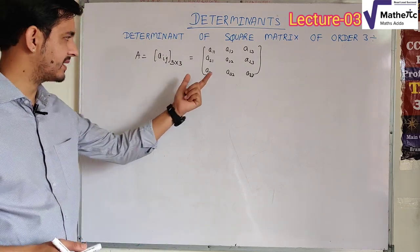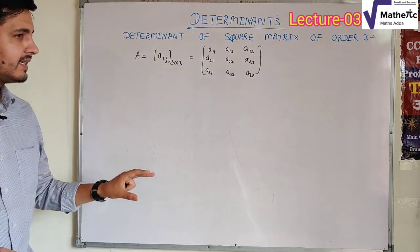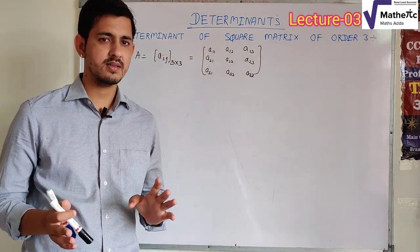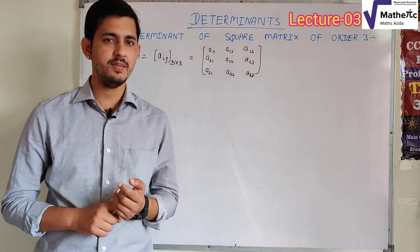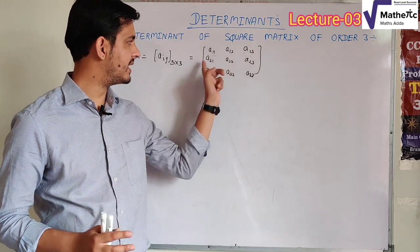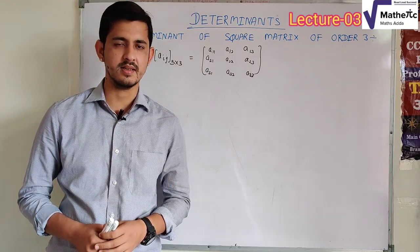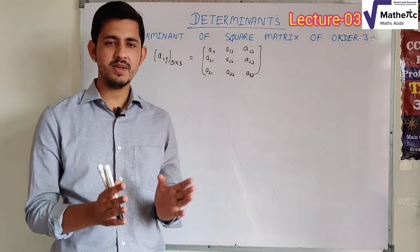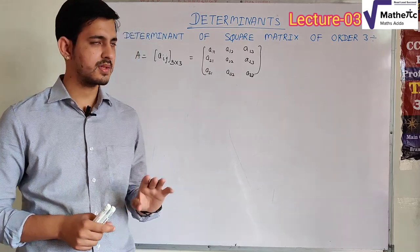If we have to find the determinant of this matrix, we can expand along any particular row — R1, R2, or R3 — or along any particular column. The key property is that no matter which row or column you expand along, your answer will be the same. This is the main property.